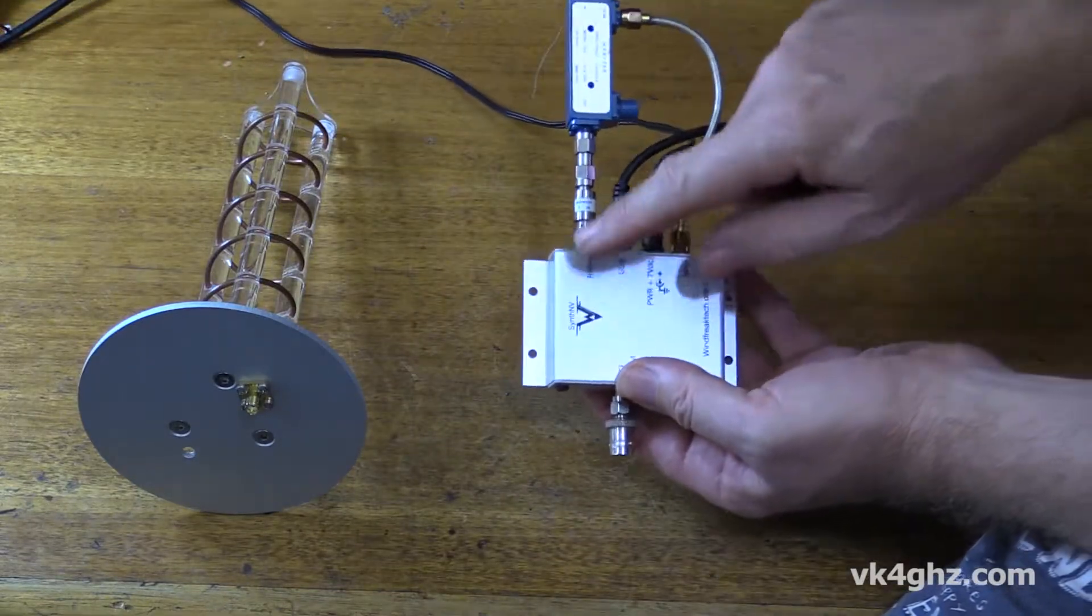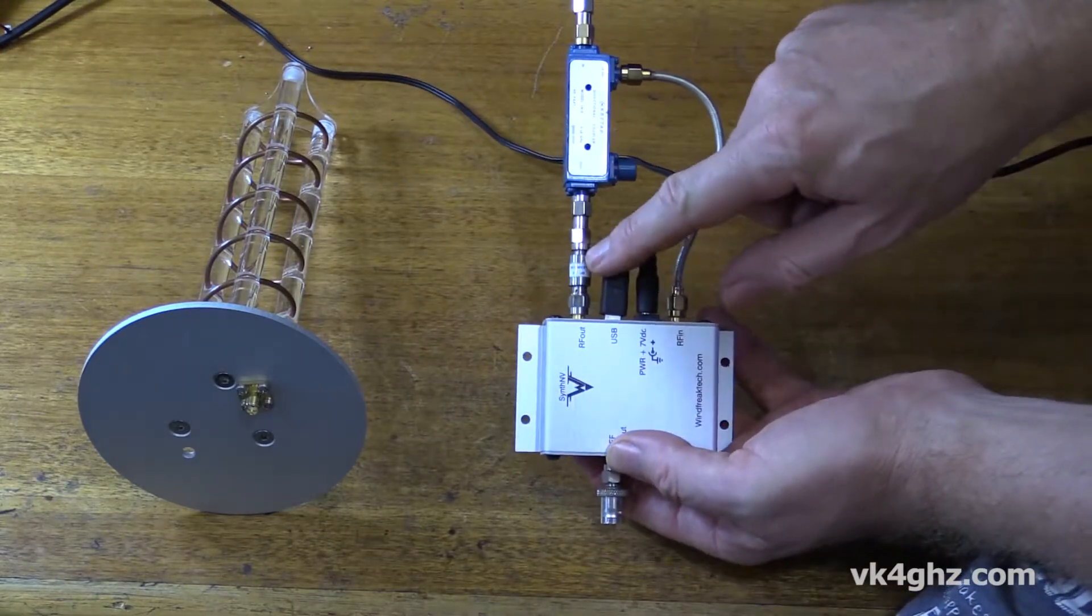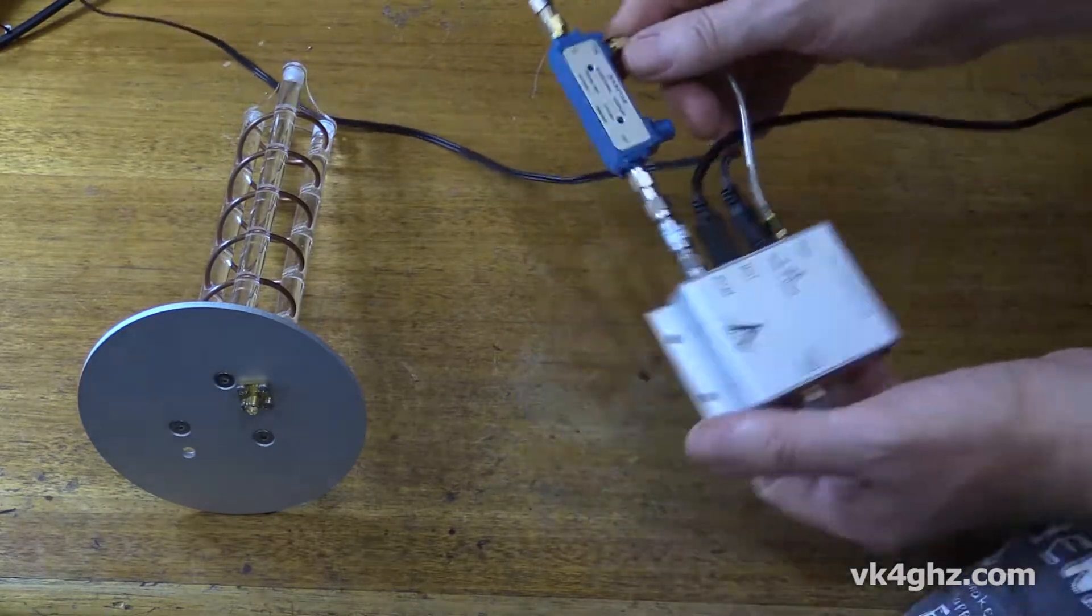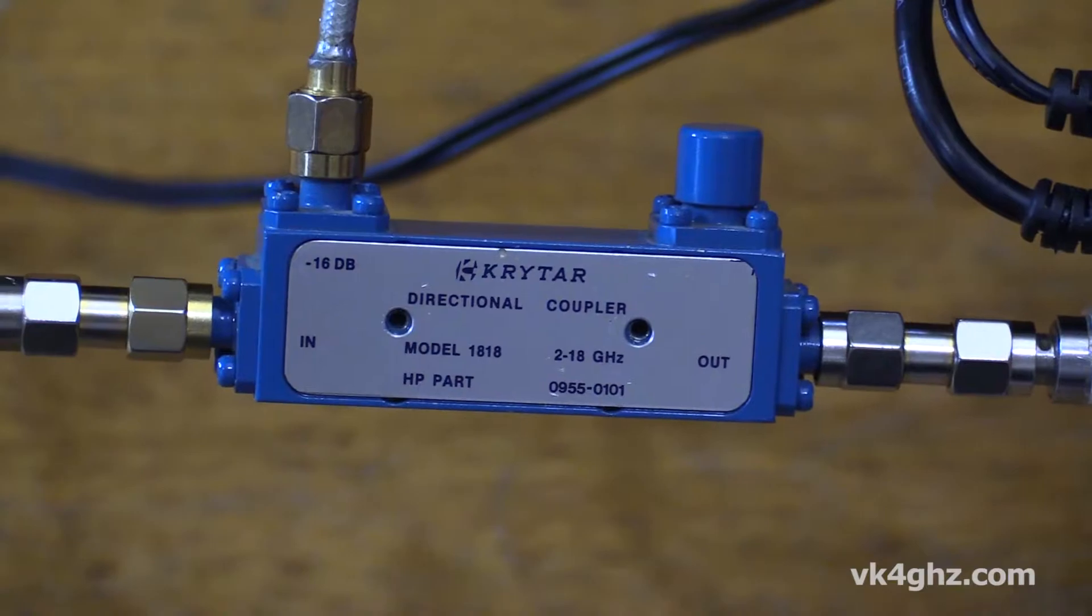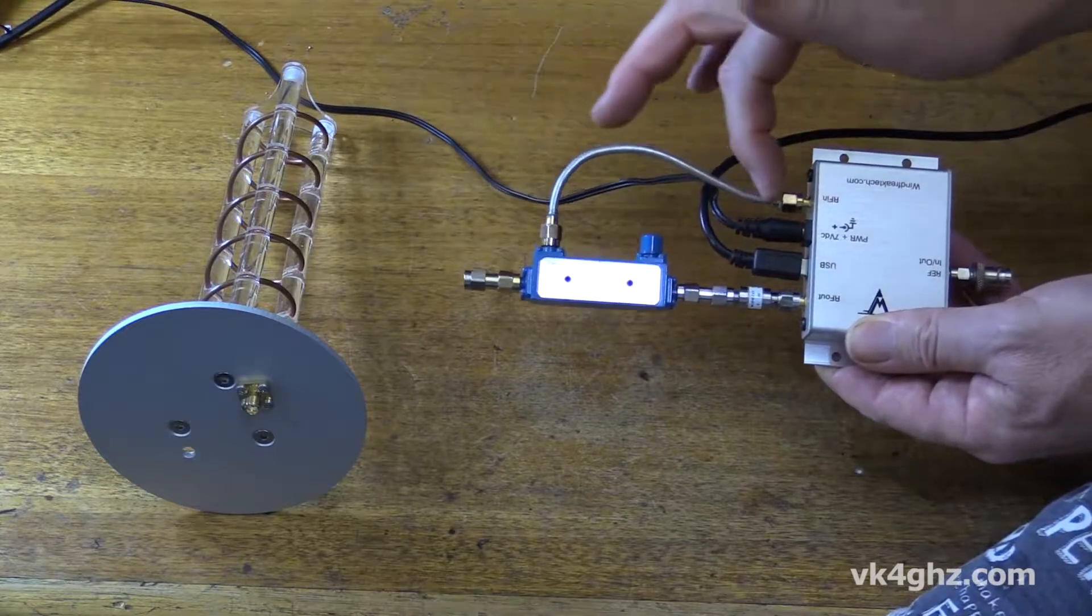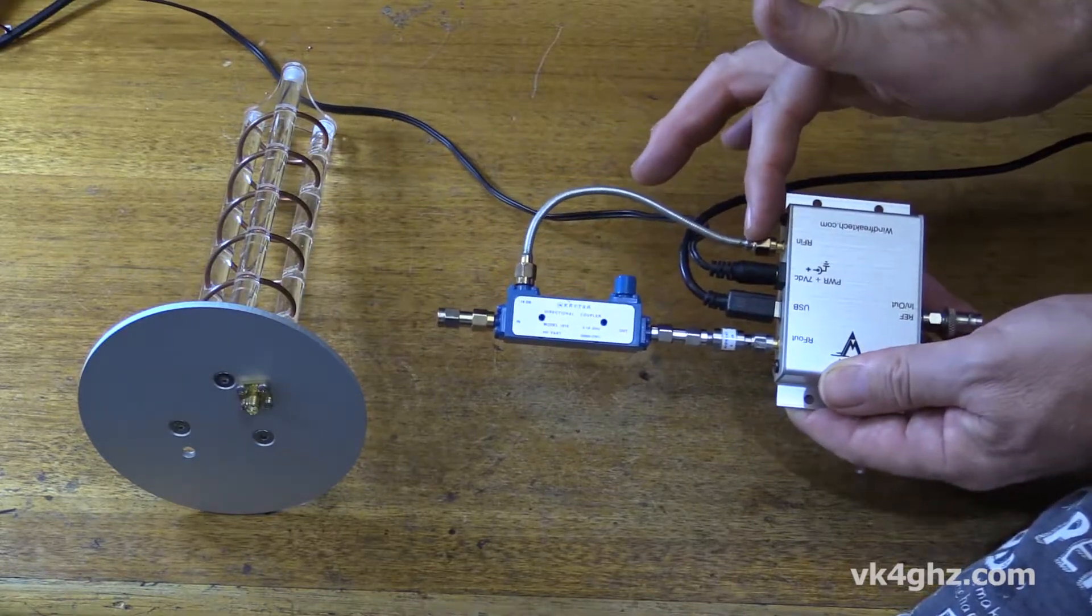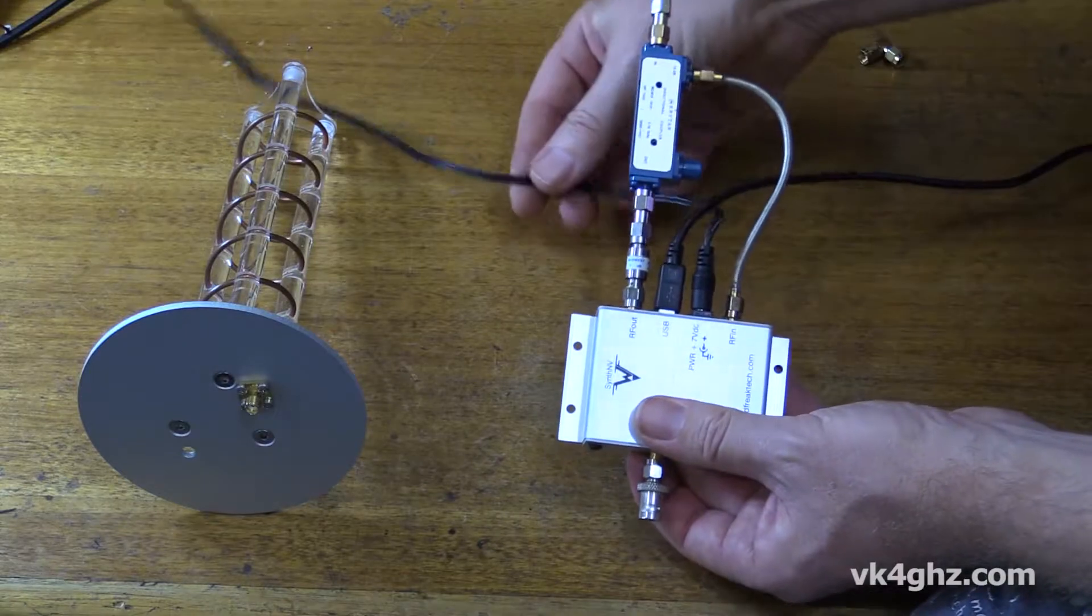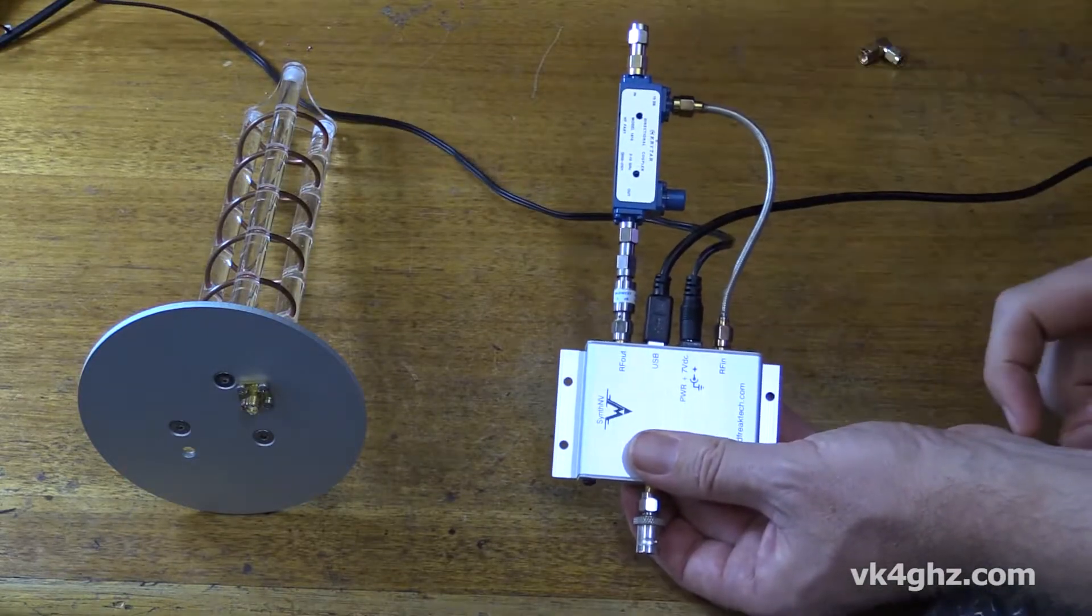So coming out of the Winfreak SynthMV, I have a small value 3 dB SMA attenuator that then feeds into a Crytar directional coupler. This one's spec to work from 2 to 18 gigahertz. Coming out of the reflected port, that goes back into the RF detector of the SynthMV. This is the USB cable for computer control and that's just simply 8 volts from a power supply.